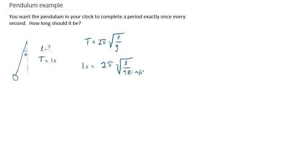So let's bring 2π to the other side. We've got to have one second divided by 2π. This has to be equal to the square root of l. Let's just take this whole thing and square it. This has to be equal to l over 9.81.